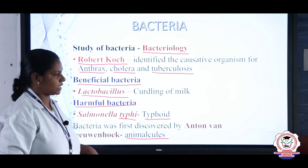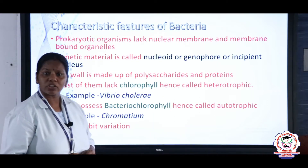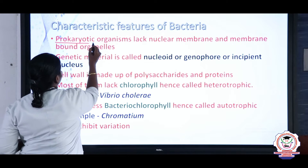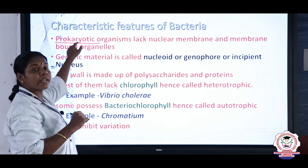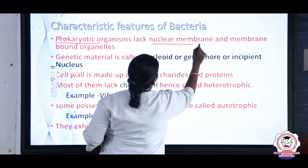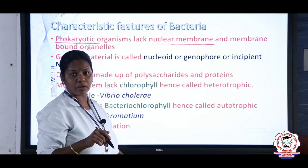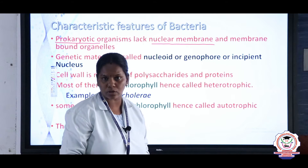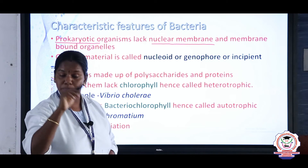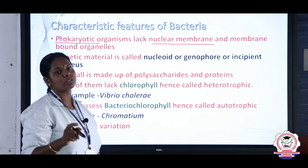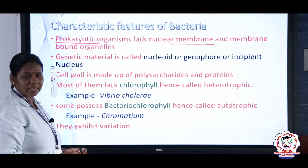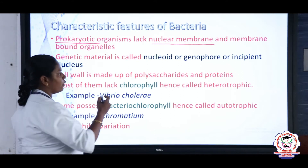Bacteria are prokaryotic organisms. 'Pro' means primitive and 'karyo' means nucleus. Prokaryotic organisms lack a nuclear membrane, and there are no membrane-bound organelles. The genetic material is not enclosed in a membrane; instead it is combined in the center in the form of a nucleoid, also called a genophore or incipient nucleus.